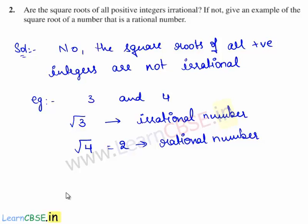Therefore, the square roots of positive integers that are perfect squares are rational numbers. That is, the square roots of all positive integers are not irrational.